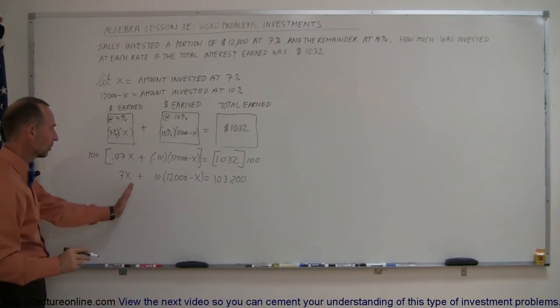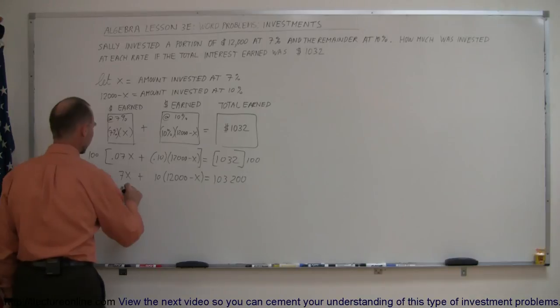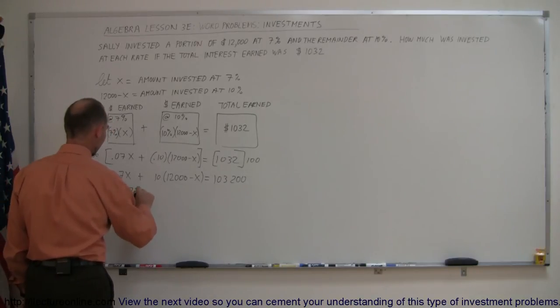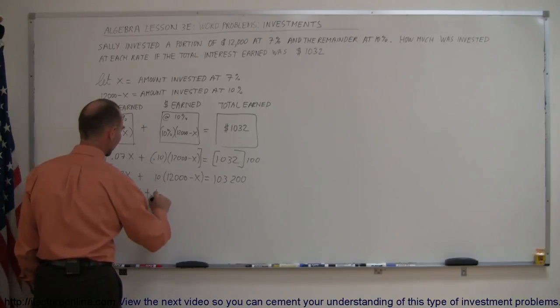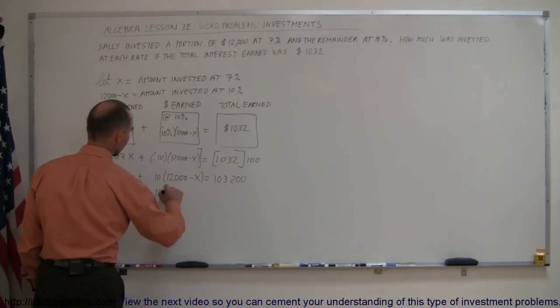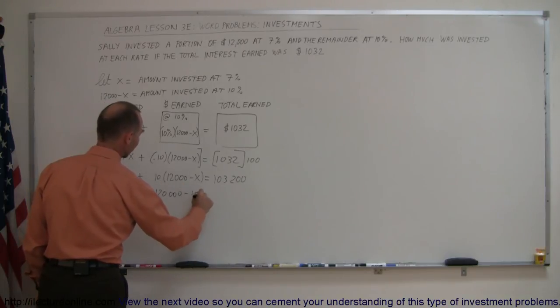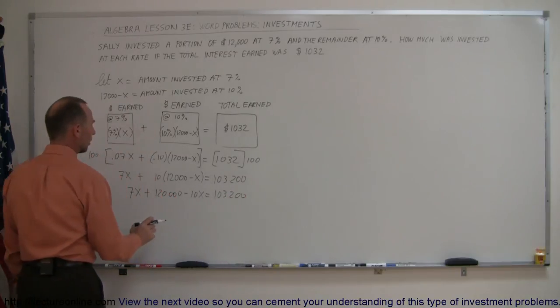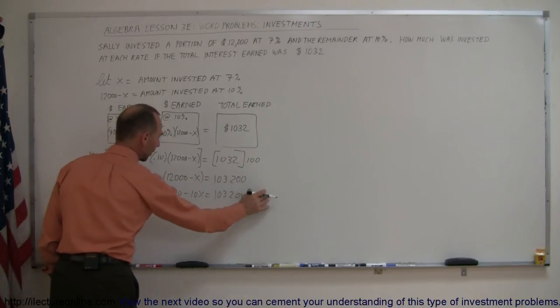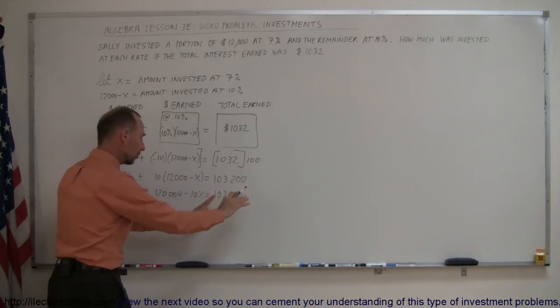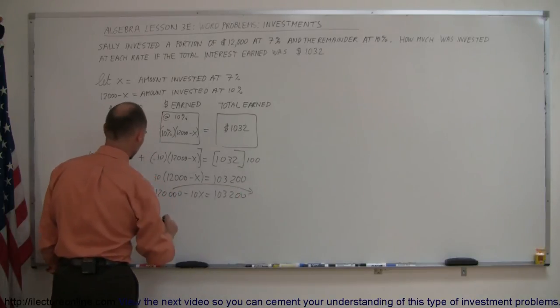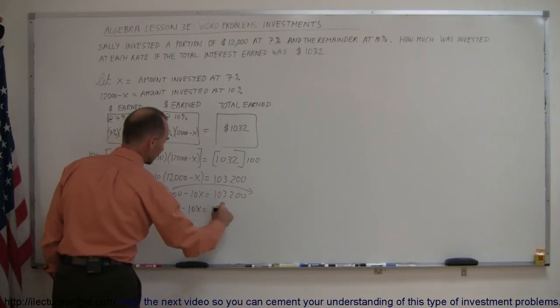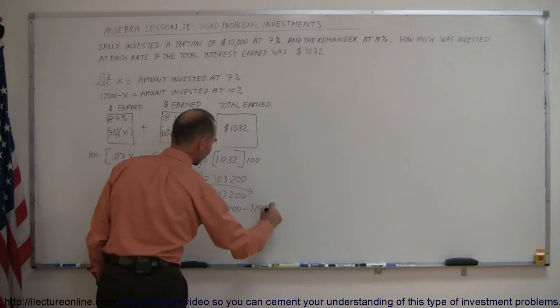Okay, next, we multiply this through to get rid of the parentheses. 7X plus 10 times this is 120,000. 10 times the minus X is minus 10X equals 103,200. Now, moving the 120,000 across, so we have all the X's on one side, all the numbers on the other side. We end up with 7X minus 10X equals 103,200 minus 120,000.